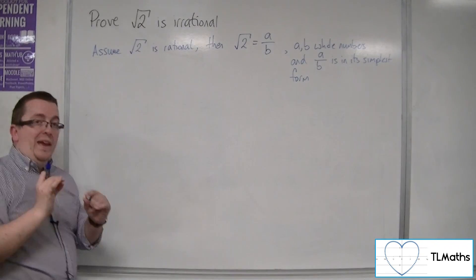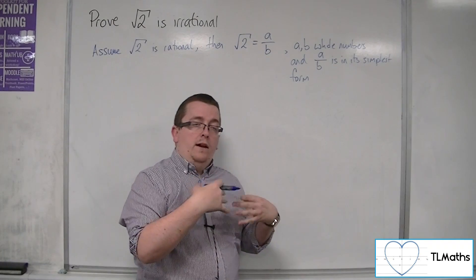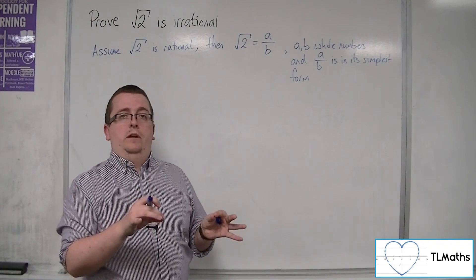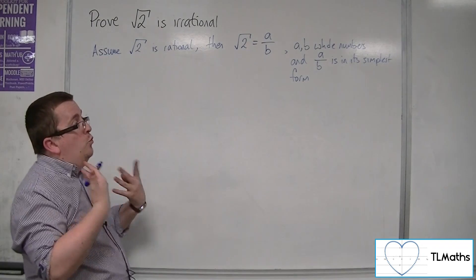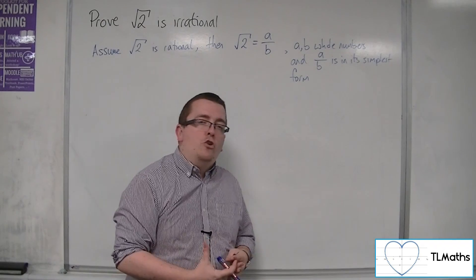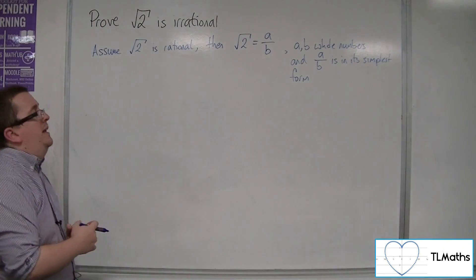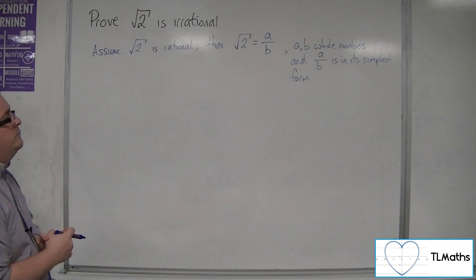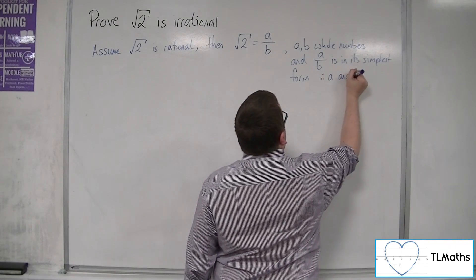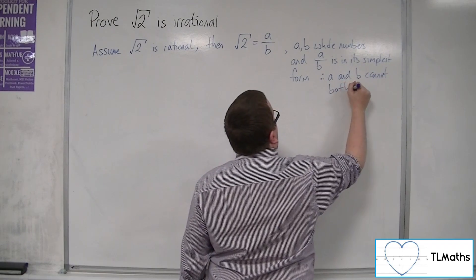Now, the consequence of saying that means that a and b cannot both be even, because obviously if they were both even, then I would be able to cancel the fraction down further than it already is. So a and b therefore cannot both be even. So let's write that down: therefore a and b cannot both be even.